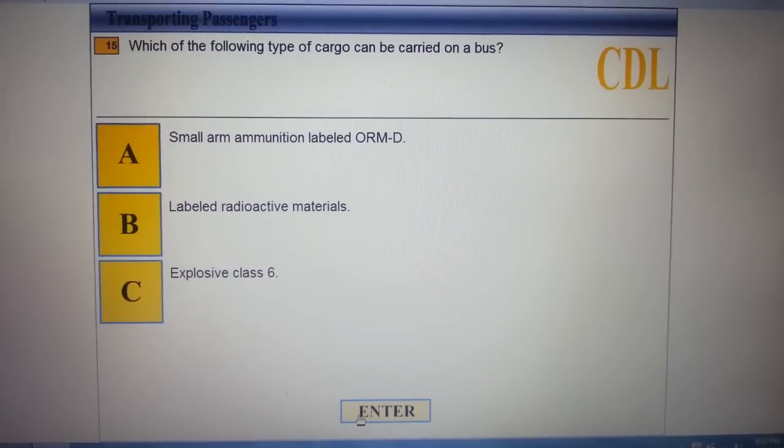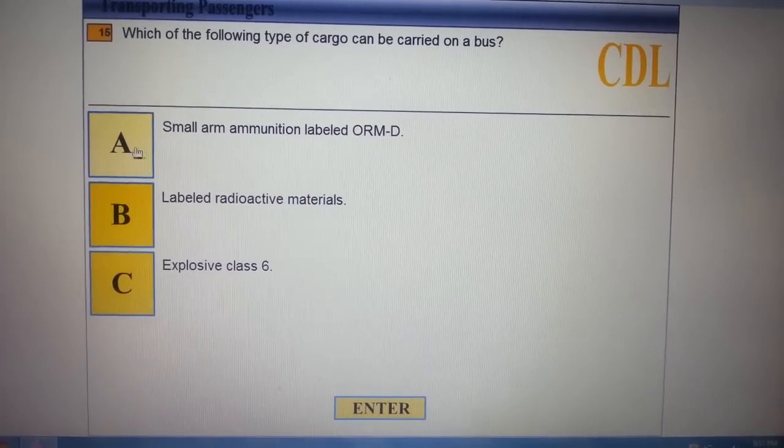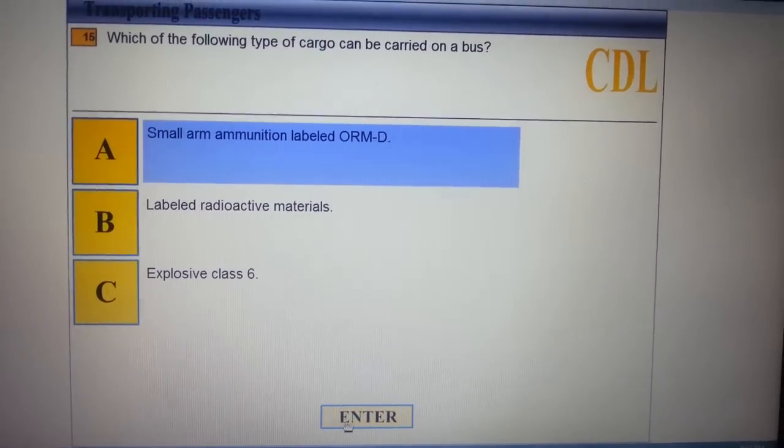Which statement is true about your rear? The best control is slow, safe speed and control of the vehicle. Which four types of cargo can be carried on the bus? Small arms, ammunition, labeled ORM-D.